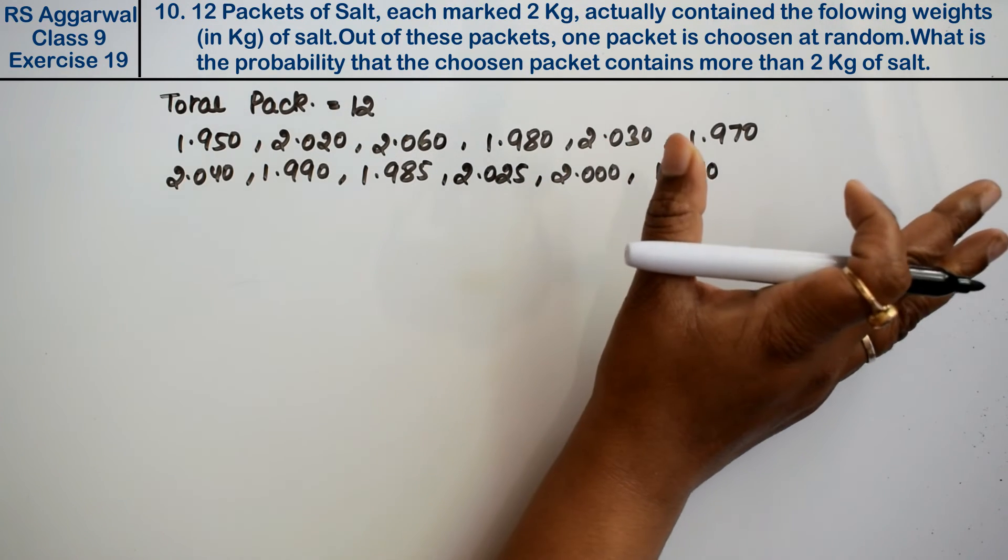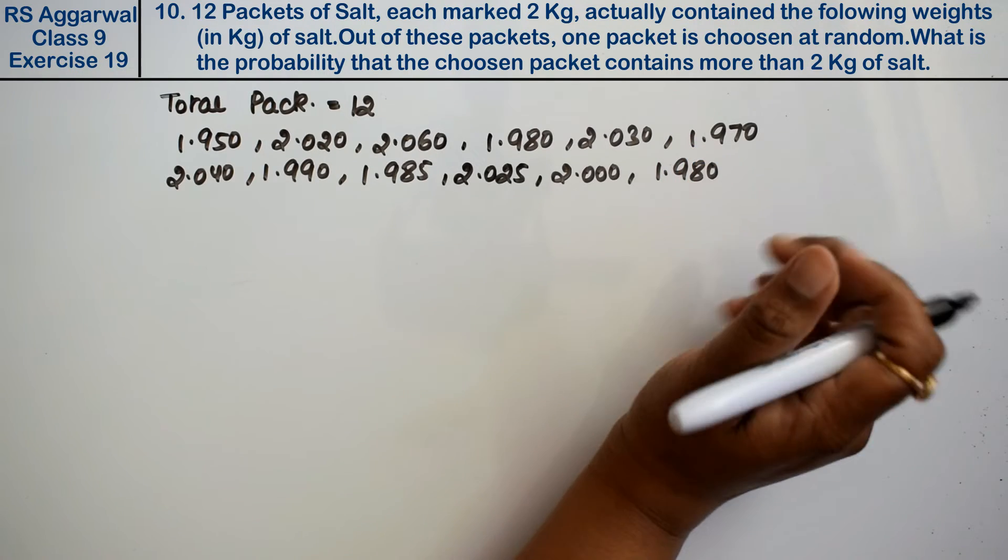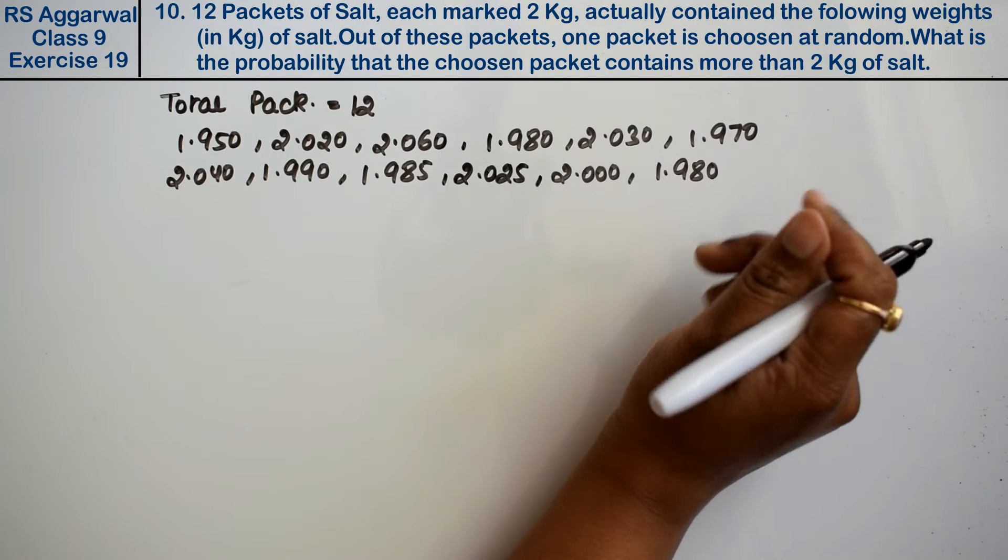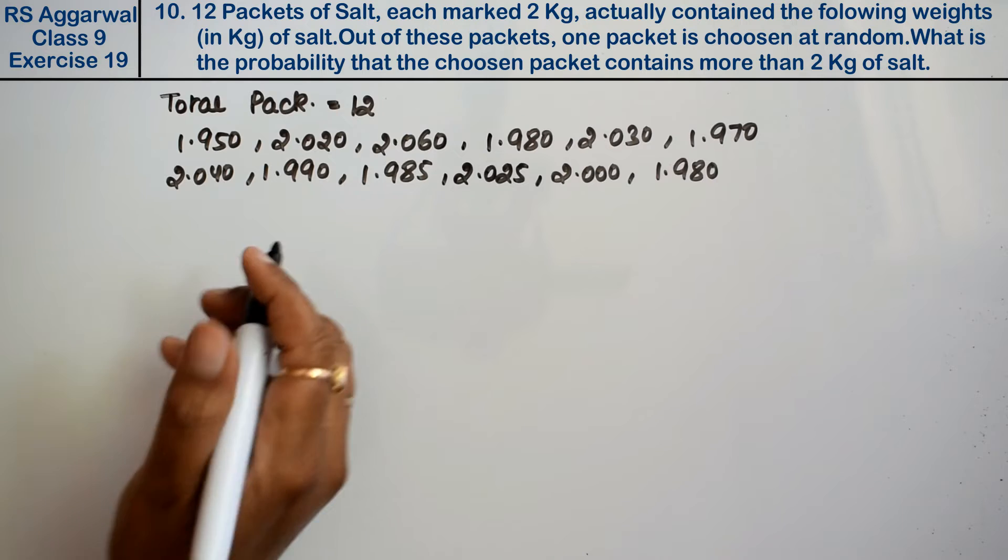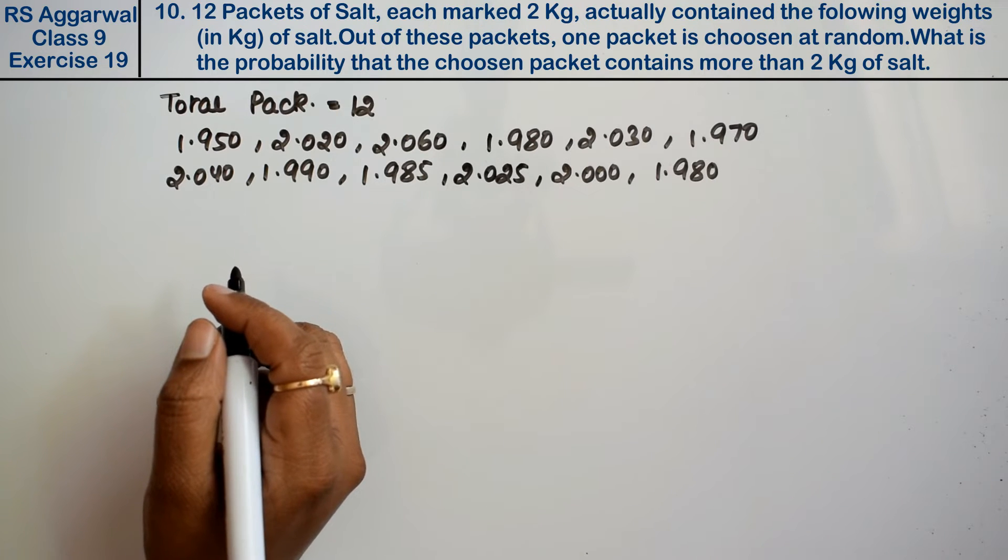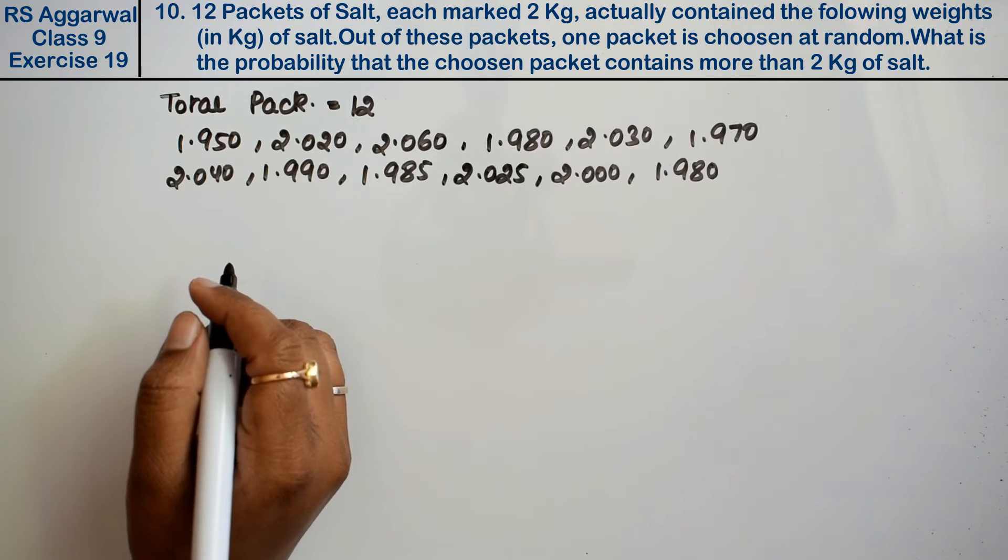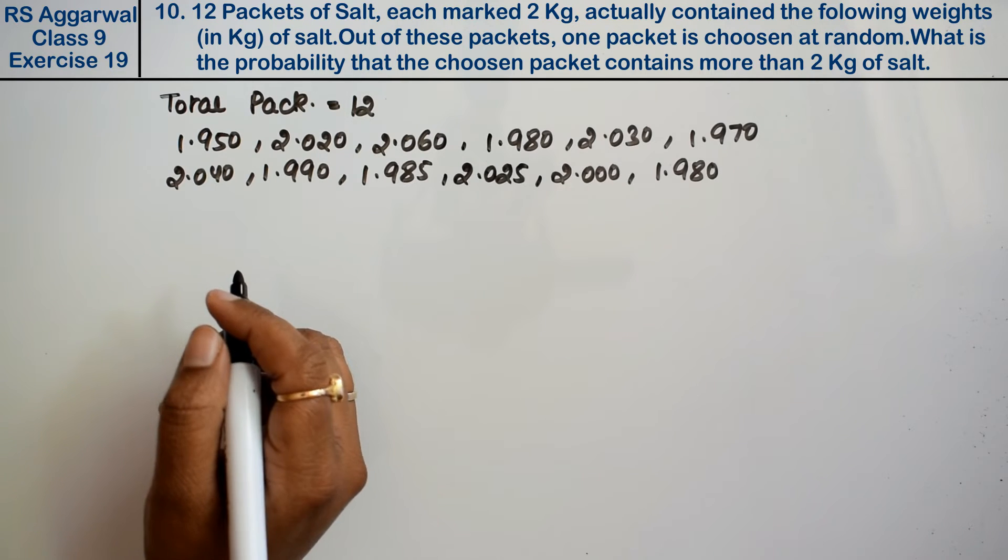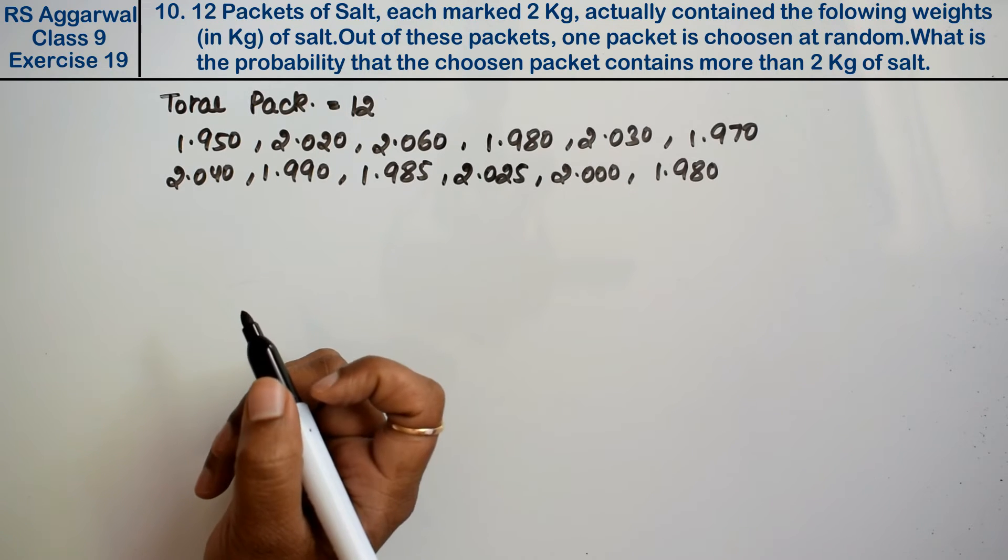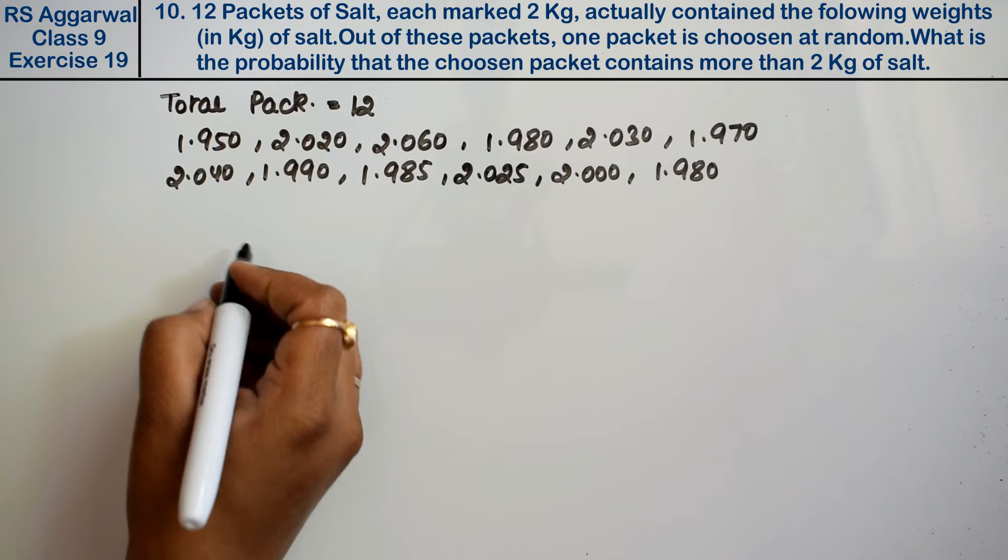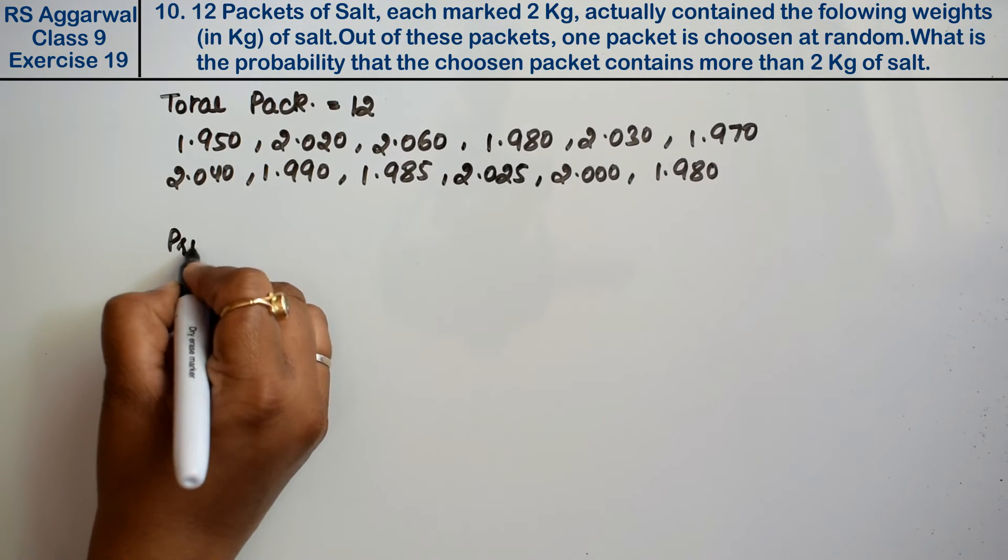These are different weights. Now, out of these packets, one packet is chosen at random. What is the probability that the chosen packet contains more than 2 kg of salt? We need to find this probability.